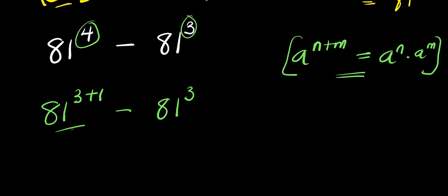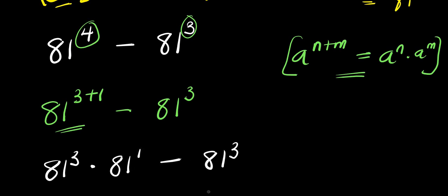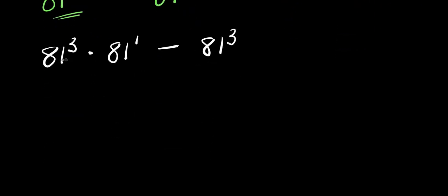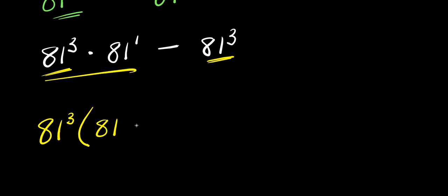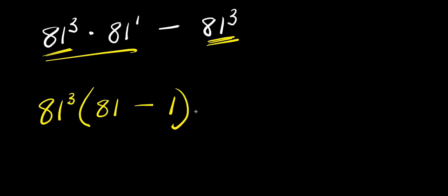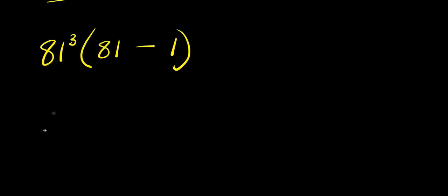Applying this identity, we get eighty-one to the power of three times eighty-one to the power of one, minus eighty-one to the power of three. We can factor out eighty-one to the power of three, giving us eighty-one to the power of three times the quantity eighty-one minus one, which is eighty.